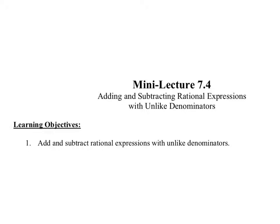In section 7.4 we're adding and subtracting rational expressions with unlike denominators. The key to solving these types of problems is to get a common denominator. Look for the LCD, the least common denominator, and multiply either fraction by the missing factors of the LCD.